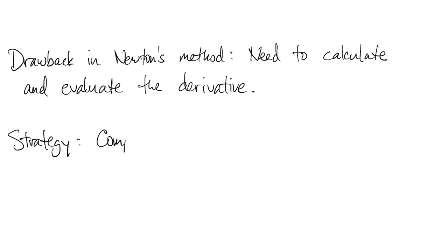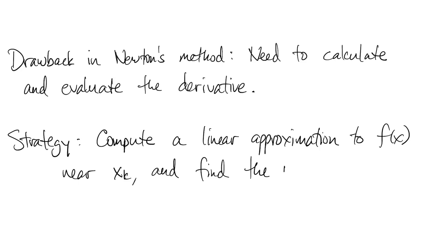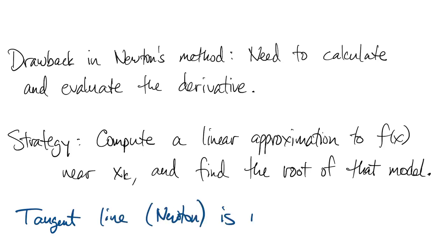Now let's recall our strategy for Newton's method. The big picture is that you compute a linear approximation to our original function near the current guess, and then you find the root of that linear model. We used a tangent line in Newton's method, but that's not the only way to construct a linear approximation.